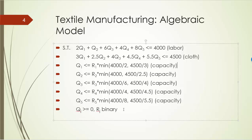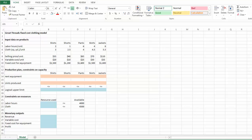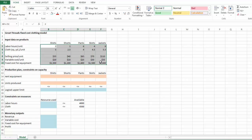In the end, we also have the non-negativity and binary constraints. Now we are ready to look at our Excel spreadsheet model. In this template, we have the information on each of the five products.